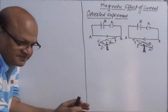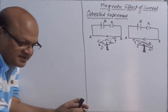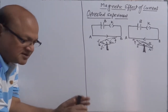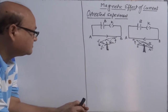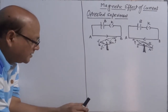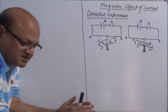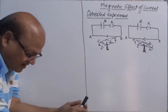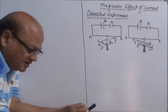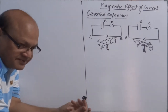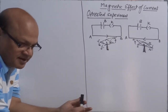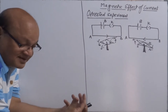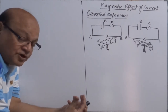The first experiment is Oersted's experiment. It was Oersted who first observed that a magnetic material kept near a current-carrying conductor gets attracted towards the conductor.